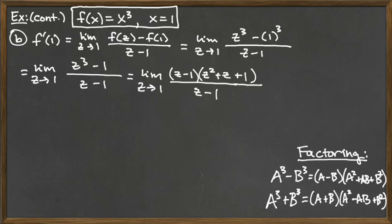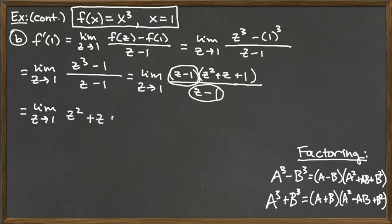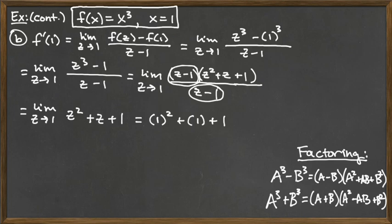When you do these problems you end up with a zero over zero situation, indicating you're going to have to do some cancellation. Here we do see the z minus 1 factor on both top and bottom. On the top it's a factor multiplied by something else, so that leaves us with the limit as z approaches 1 of the polynomial z squared plus z plus 1. We can make that computation by plugging in 1 for z: 1 squared plus 1, plus the 1 at the end.